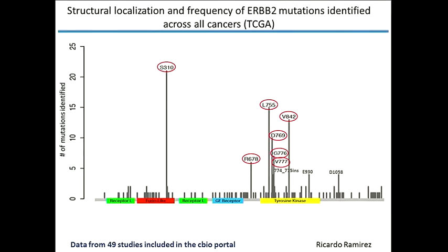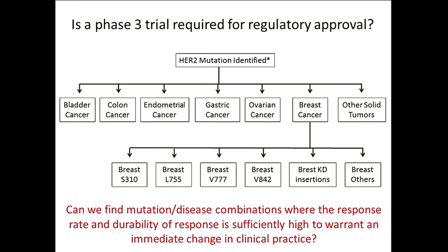The complicating factor, unlike the BRAF inhibitor study where we just let on patients with V600E, is this issue of multiple different alleles. It's very possible we'll see a better response with some mutants than others. So we've already amended this study — we're going to take the breast cancer basket and subdivide it into different baskets: a breast cancer basket for V777L mutations, one for S310F, and so on, always with an 'other' category. Ultimately, since there's probably only about 100 patients in the country with breast cancer and V777L mutations at any one time, we need to find a mutation-disease combination where the response rate and durability is so high it warrants an immediate change of practice.